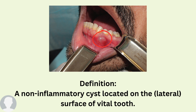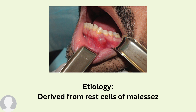We will speak about what are the causes behind it. What is the etiology behind this type of cyst? It is derived from the rest cells of Malassez, not like the dentigerous cyst — also referred to as the eruption cyst — which is derived from the reduced enamel epithelium. The etiology behind each cyst is important to know in order to distinguish them from one another.